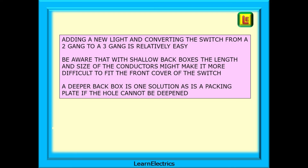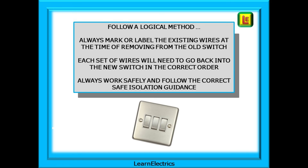A deeper back box is one solution and this is easy for hollow walls. For a brick wall a packing plate may be the way to go if the hole cannot be deepened. Do follow a logical method — make your own sketches or photograph what you have before you remove any wires. Always mark or label the existing wires at the time of removing them from the old switch. Each set of wires will need to go back into the new switch in the correct order. And always work safely and follow the correct safe isolation guidance.